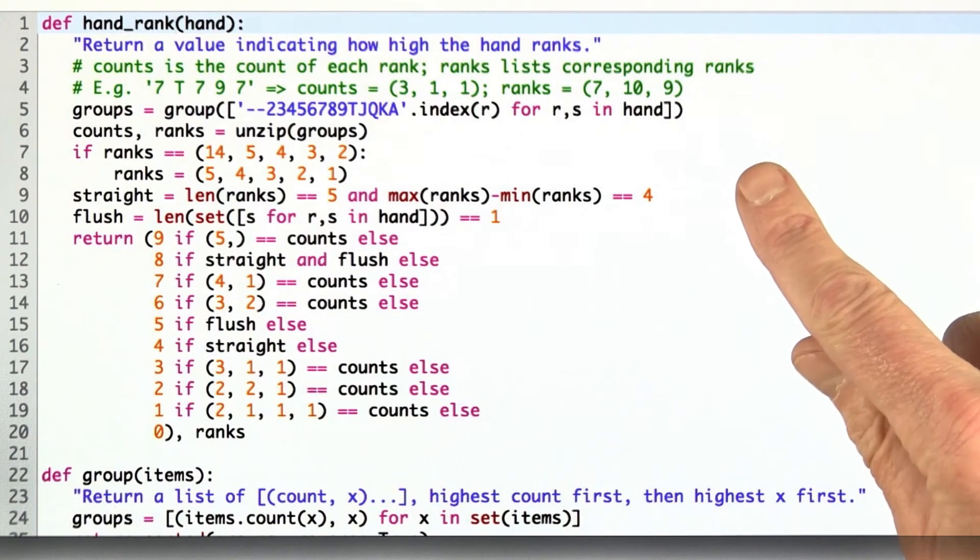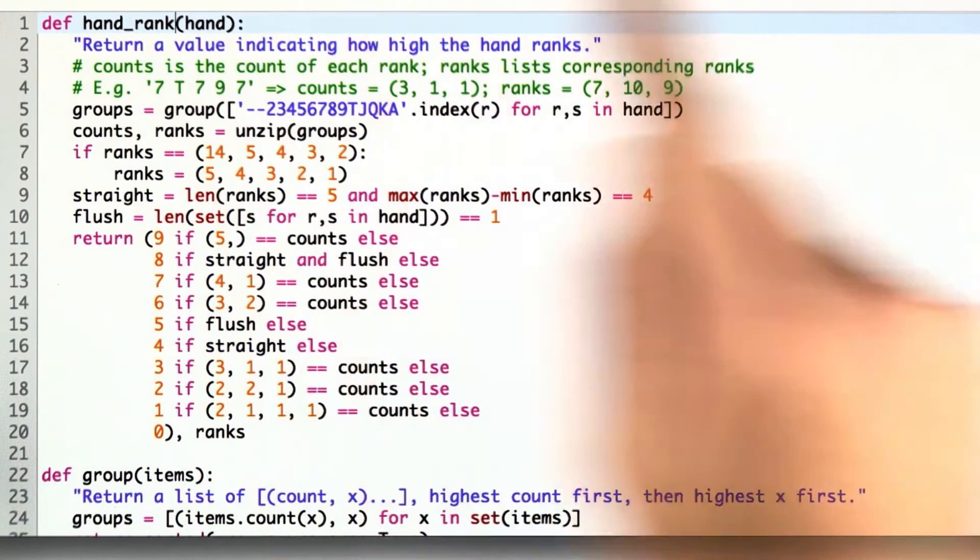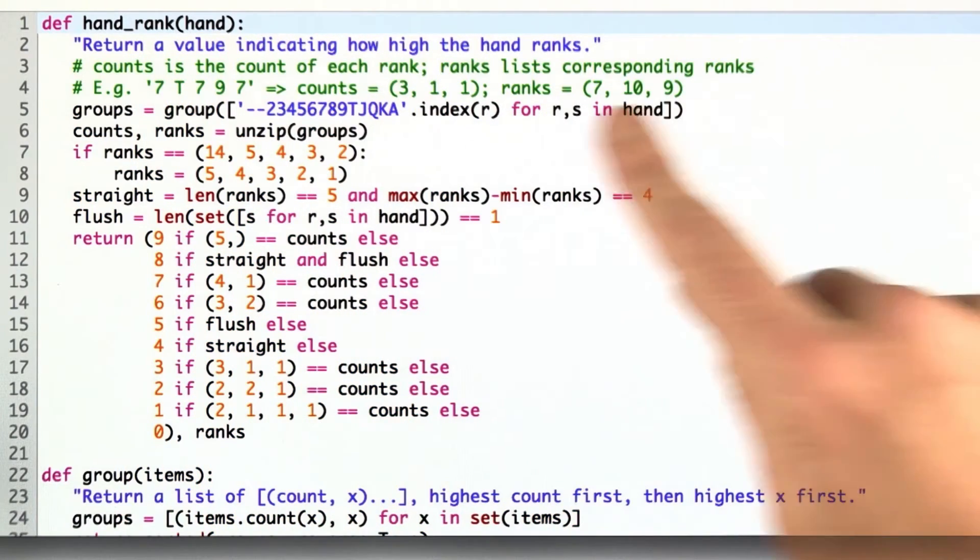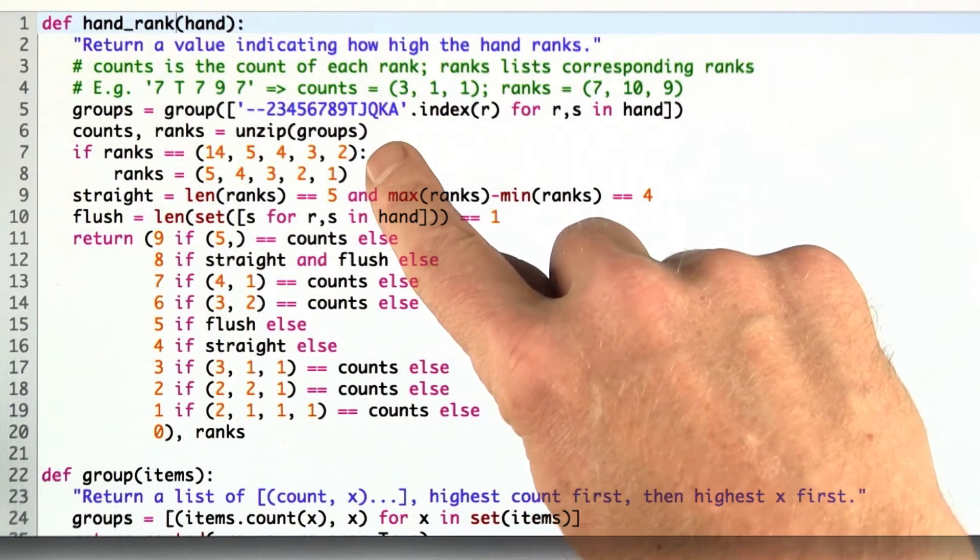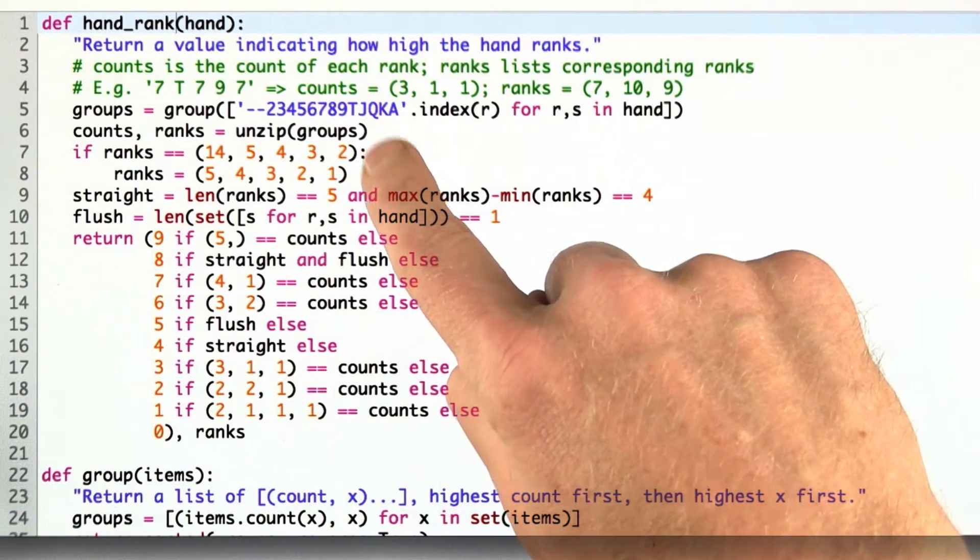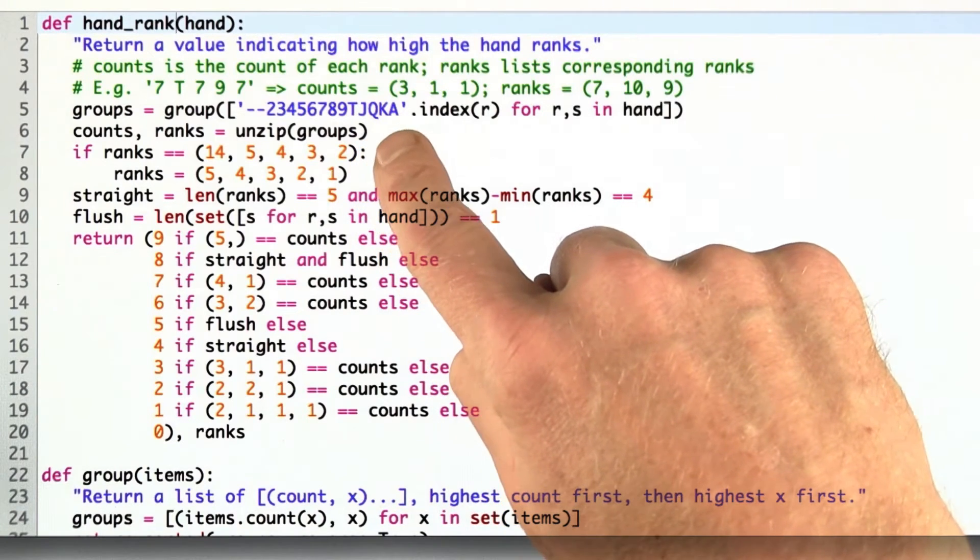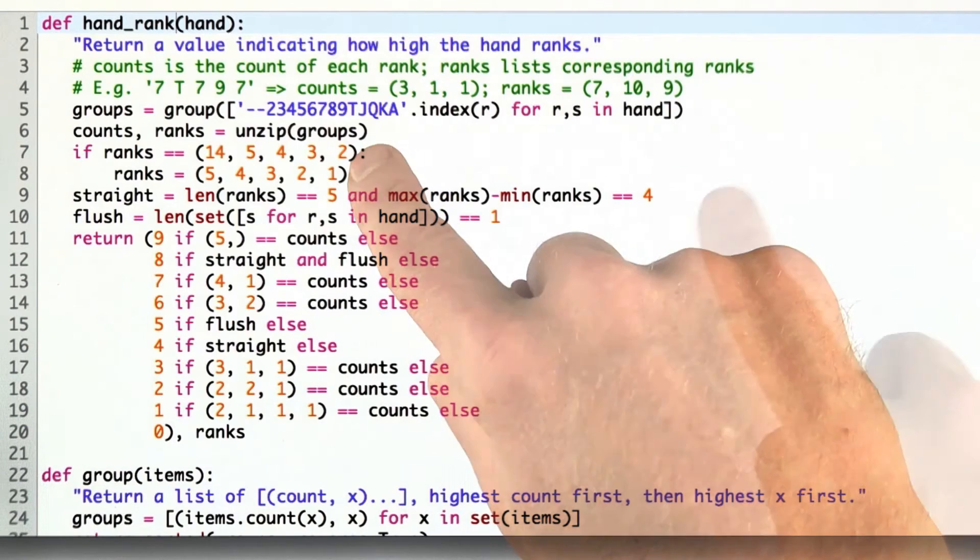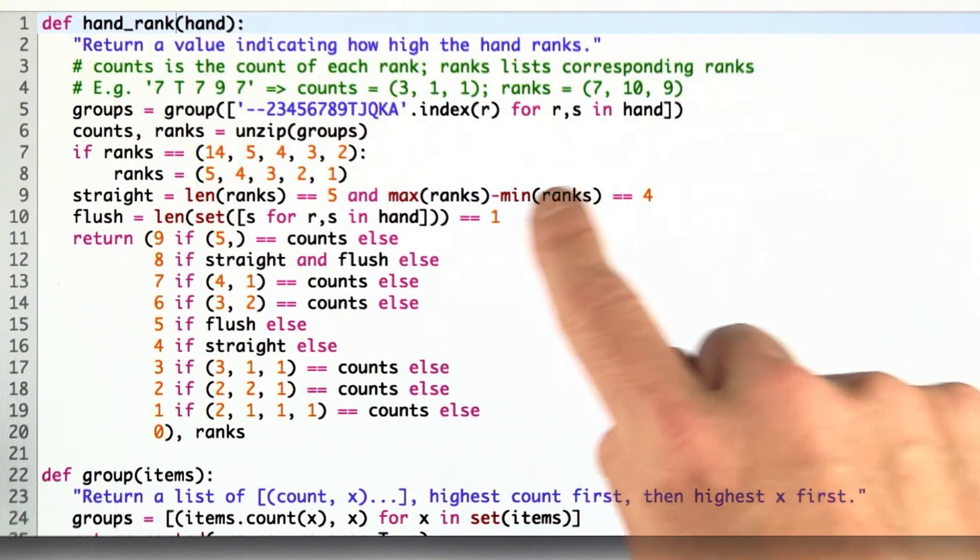Here's the new hand rank function using this new representation for hands. We call it in the same way. We pass in a hand. Now we create the groups and pull out the counts and the ranks, and then we do what we did before where we say we have to deal with the ace high straight, and so change the ranks if we have to. Then similarly to before, we check to see if we have a straight or a flush.